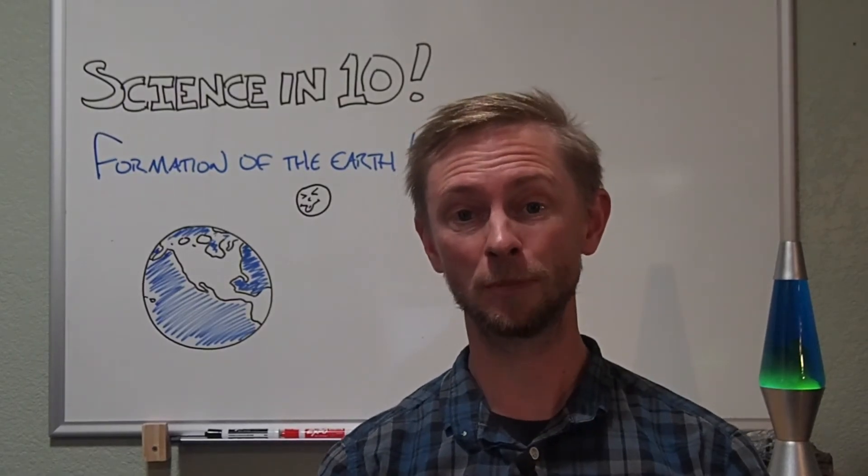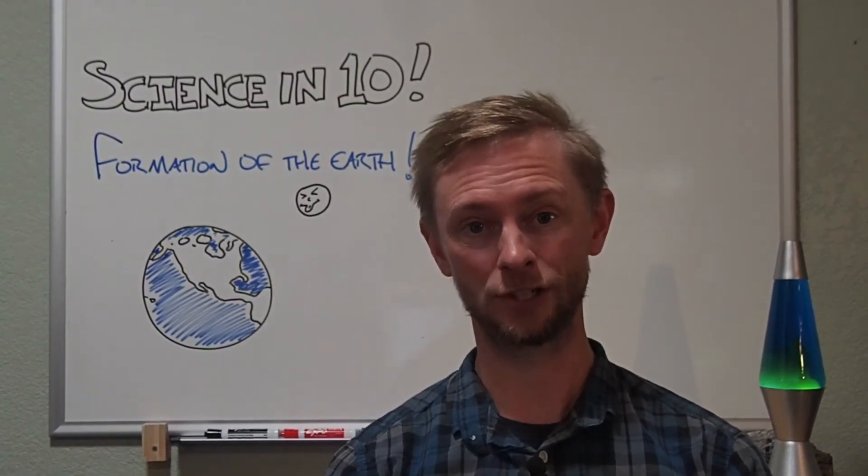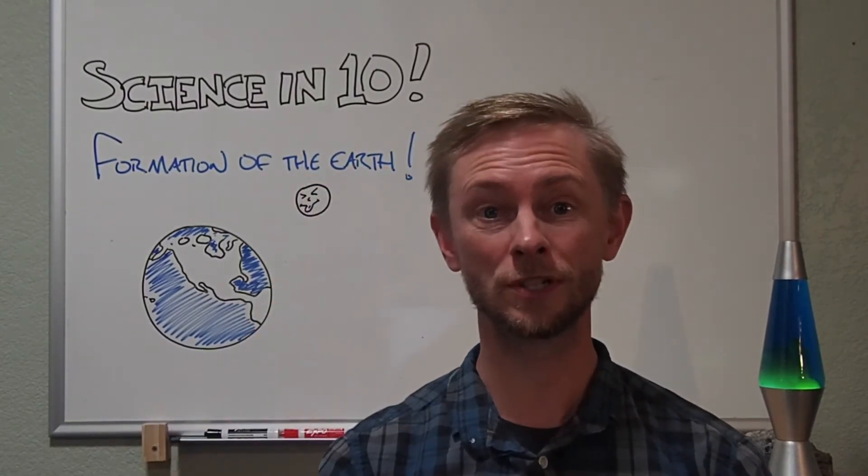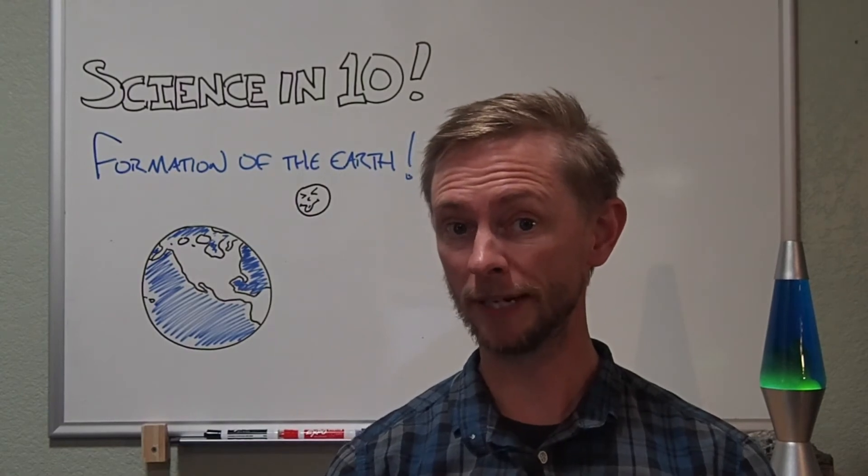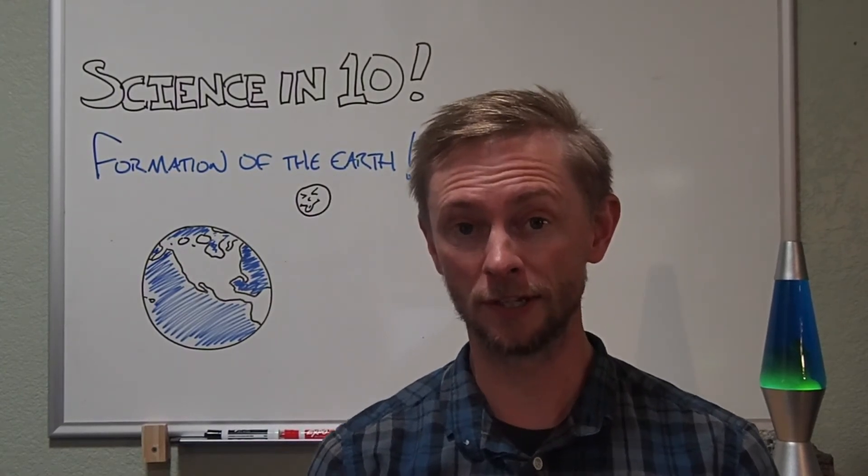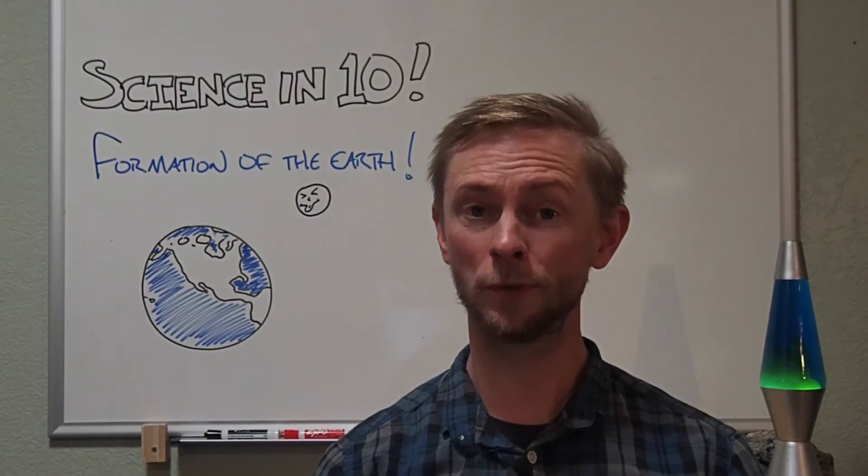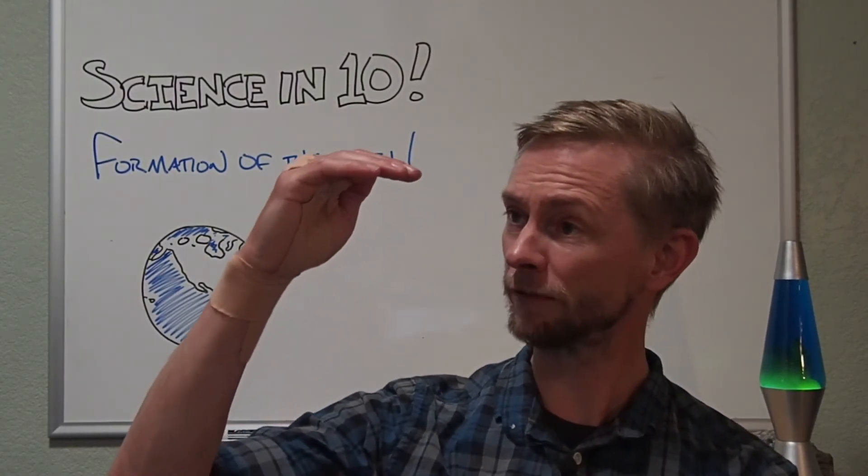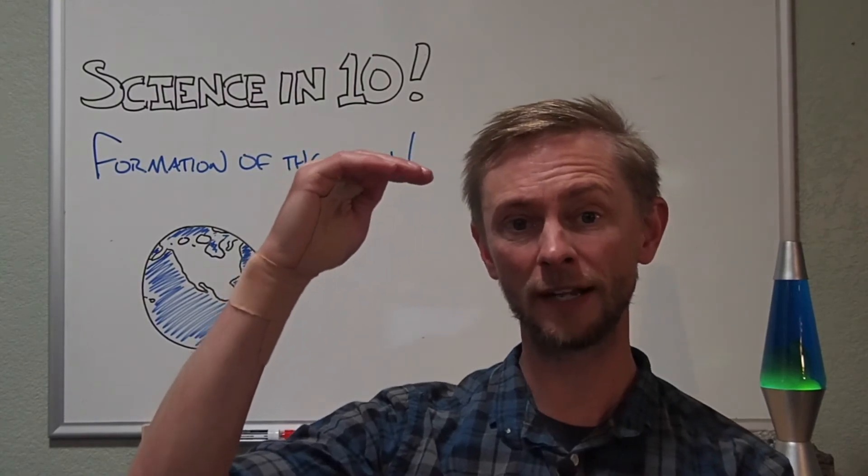This same process took place during Earth's early history. Dense materials sank towards the center, and the lighter elements floated towards the surface. And during this planetary differentiation, or density stratification, the early Earth was also cooling. The lighter elements that floated towards the surface slowly solidified into the crust.